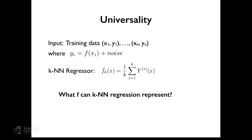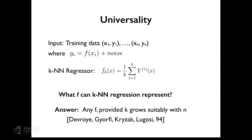The first question is: what kind of function can we approximate well using k-nearest neighbors? Interestingly, we can basically approximate any f, provided k grows suitably with n. This is one in a series of results by Deborah et al., covering various metric spaces under various conditions.